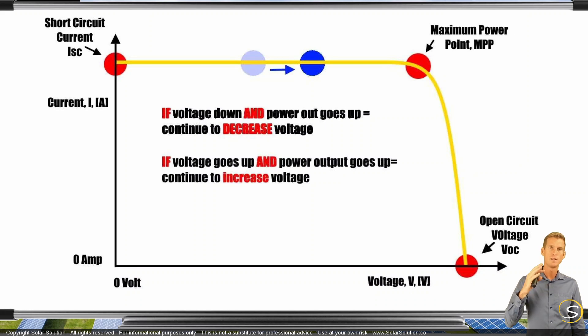So if the irradiance decreases or increases due to somebody walking in front of the panel, or a bird flying over, or just a cloud partially covering the panel, it is really fast in adjusting.